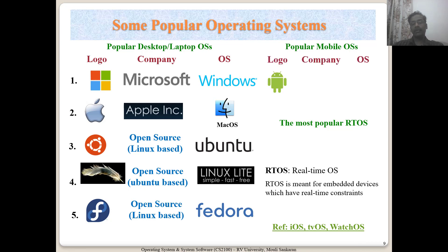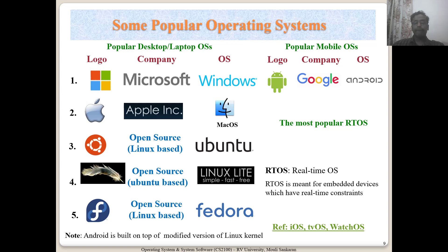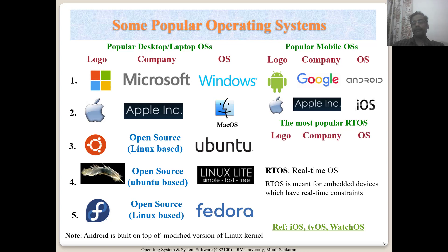Let us look at the mobile OS. Android, which was taken over by Google long ago, is actually built on the Linux kernel. Then we also have iOS, which runs on all Apple mobile systems. We also have RTOS, and I am showing you Wind River VxWorks as one of the popular operating systems in that market.